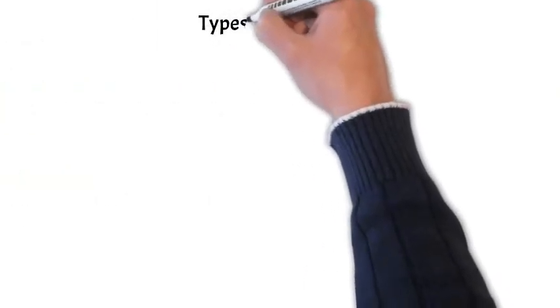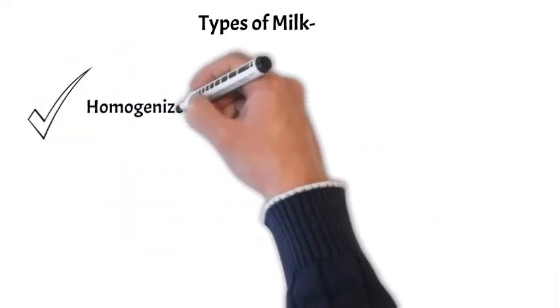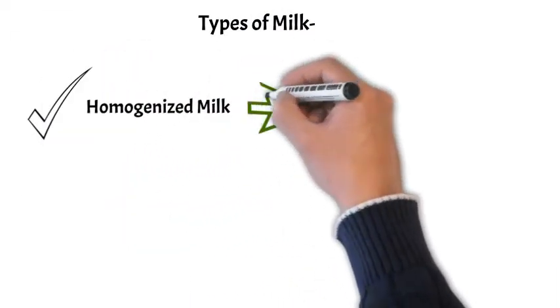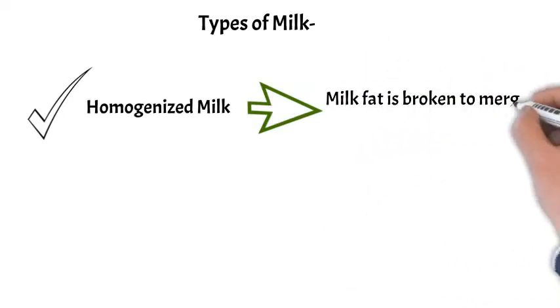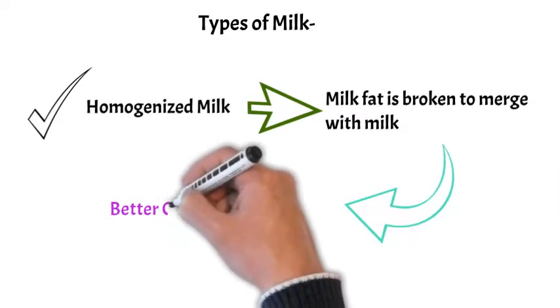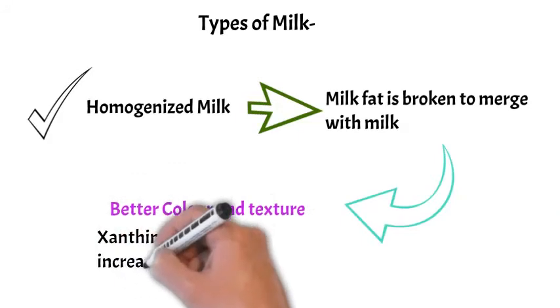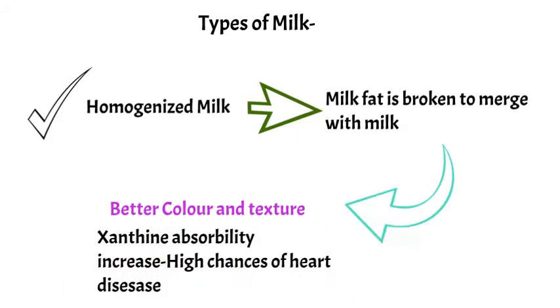The third type of milk is called homogenized milk, which involves breaking the milk fat to merge with the milk. It gives the milk a better color and texture, but it also increases the absorbability of xanthine oxidase, increasing the chances of heart disease.